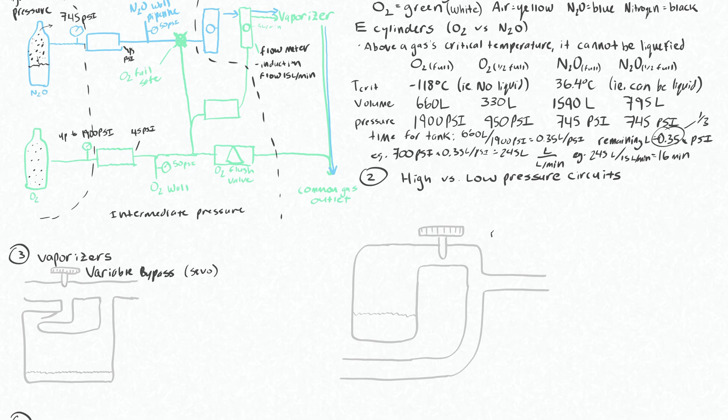The other one that exists is for desflurane. It has its own vaporizer because the characteristics of this gas are different. Starting with the variable bypass vaporizer, it has this dial here and you would dial in a certain percent that you want. It would allow a certain amount of gas to bypass the vaporizer versus go down through the vaporizer and pick up the sevo in the gas form and mix.